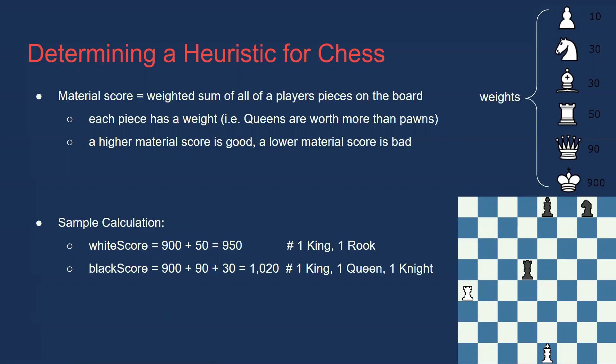For example, given the board in the bottom right, the score for white is 950, since there is one king worth 900, one queen worth 90, and one knight worth 30. Now that we have our heuristic, let's write the heuristic evaluation function.